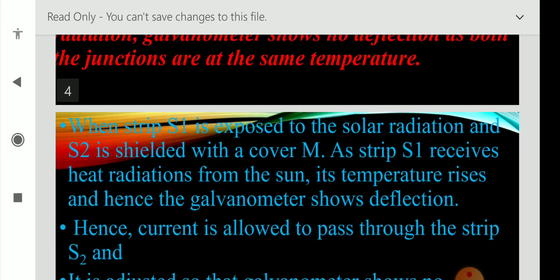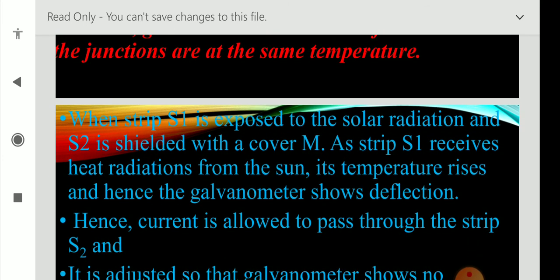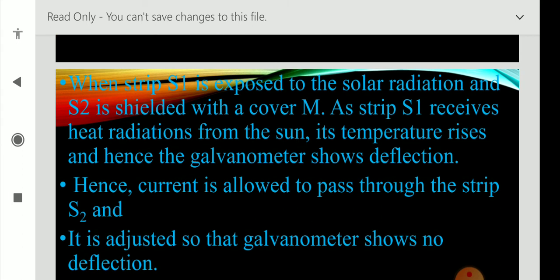When strip S1 is exposed to the solar radiation, one strip S1 is exposed to solar radiation and S2 is shielded with the cover M, that is the shielding cover M.